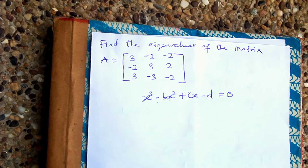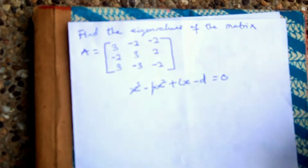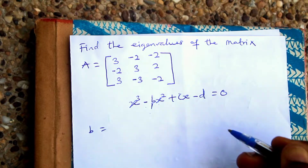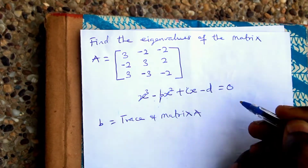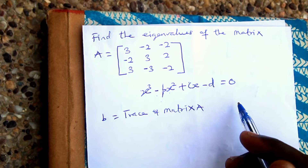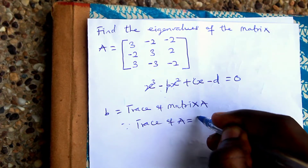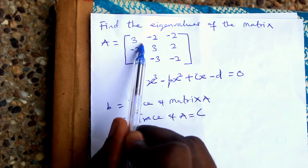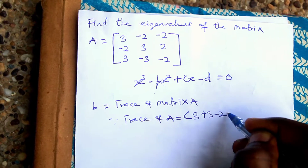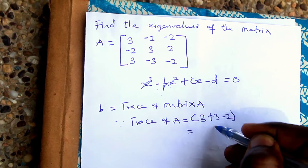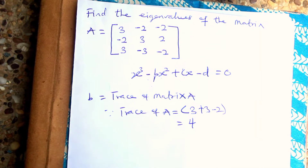In this cubic form, b is the same as the trace of matrix A — that is, the sum of the diagonal elements. For our matrix, the diagonals sum to three plus three minus two, giving a trace of four.